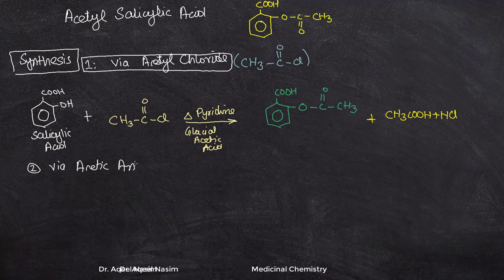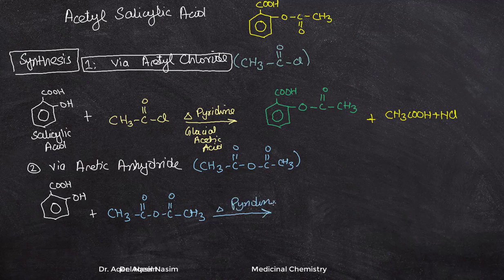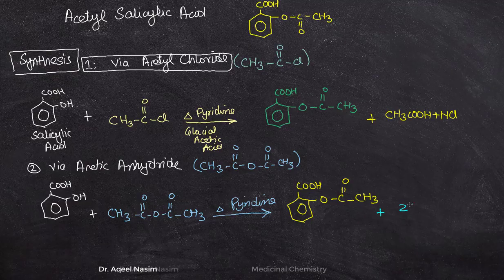The second pathway is via acetic anhydride, which has the structure CH₃C(=O)-O-C(=O)-CH₃. The starting point is again salicylic acid, combined with acetic anhydride. In the presence of pyridine, this gives acetyl salicylic acid along with two molecules of acetic acid (CH₃C(=O)OH) as a byproduct.